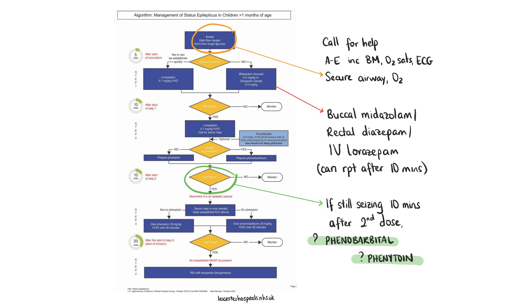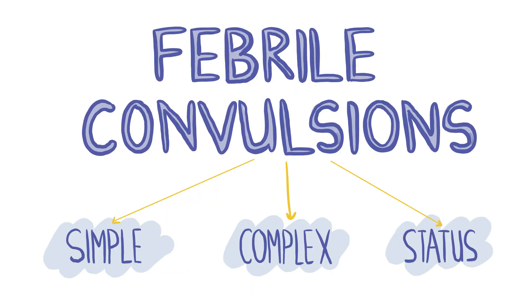If seizures continue, seniors may consider intravenous phenobarbital or phenytoin as second-line treatment in hospital. Febrile convulsions are convulsions in children between six months and six years, associated with a temperature of 38 degrees Celsius and above, in the absence of CNS infection, metabolic imbalance and neurological conditions. They can be classified into three groups: simple, where the patient has had a generalized tonic-clonic seizure up to 15 minutes not recurring within 24 hours; complex or atypical, where the seizure lasts more than 15 minutes, is focal or recurs within the same febrile illness; and status, where the seizure lasts more than 30 minutes.